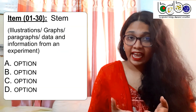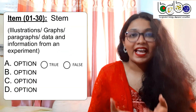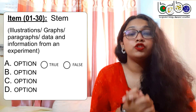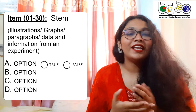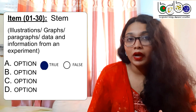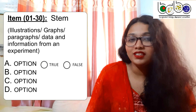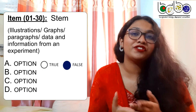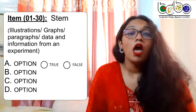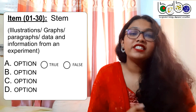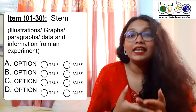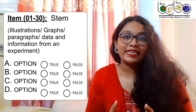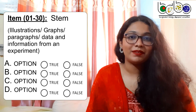For example, if option A from an item is true according to its stem, then you pick true, and if it's false, you pick false for it. The same criterion goes for option B, C and D of the item.